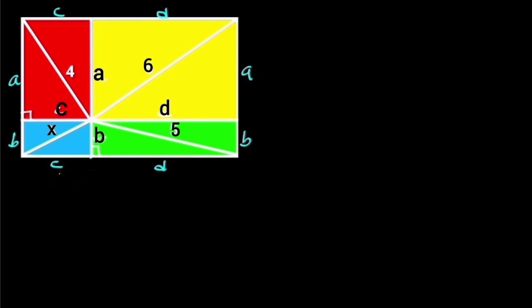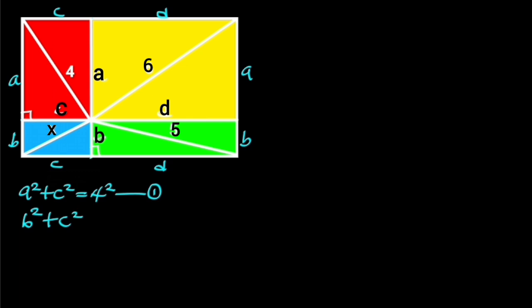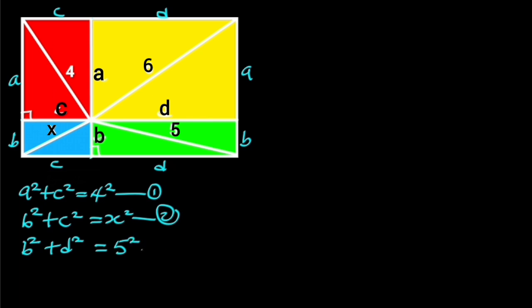Considering the right triangle in the red rectangle, from Pythagoras' theorem: A squared plus C squared is equal to 4 squared. Let this be equation 1. Next, let's consider the right triangle in the blue rectangle. From Pythagoras' theorem: B squared plus C squared is equal to X squared. Let this be equation 2. Next, let's consider the right triangle in the green rectangle. From Pythagoras' theorem: B squared plus D squared is equal to 5 squared. Let this be equation 3.